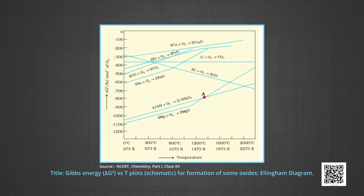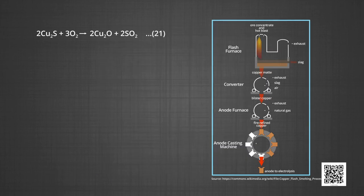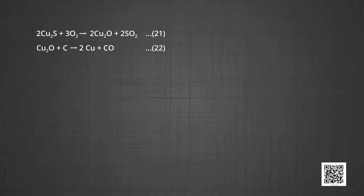Now let us understand the extraction of copper from cuprous oxide using Ellingham diagrams. In the graph of ΔG° versus temperature for the formation of oxides, the cuprous oxide line is almost at the top. So it is quite easy to reduce oxide ore of copper directly to the metal by heating with coke, as both lines — coke/CO and coke/CO₂ — are at much lower positions in the graph, particularly after 500–600 K. However, most of the ores are sulphide and some may also contain iron. The sulphide ores are roasted and smelted to give oxides: Cu₂S + O₂ → Cu₂O + SO₂. The oxide can then be easily reduced to metallic copper using coke: Cu₂O + coke → Cu + CO.